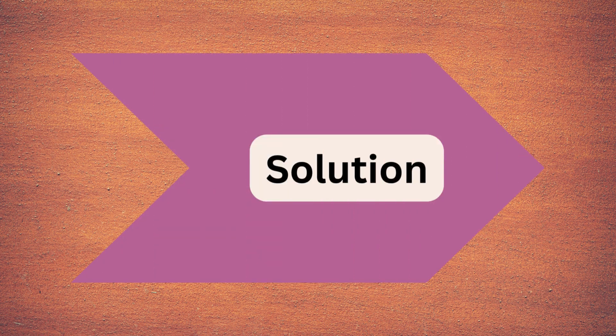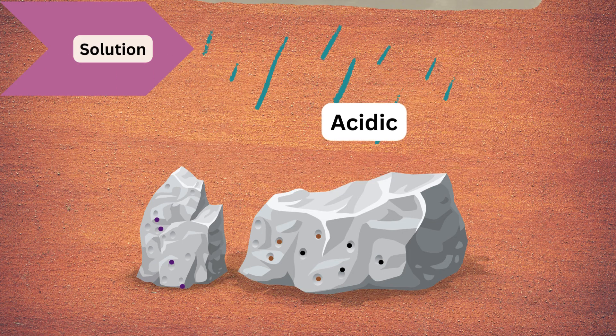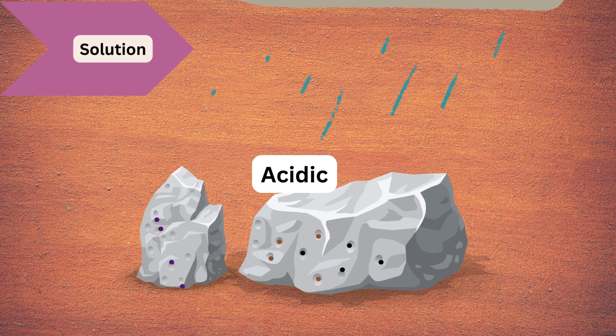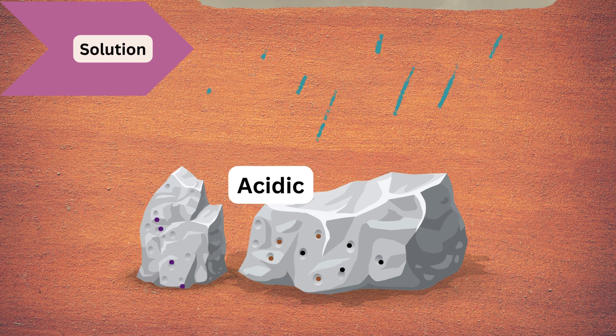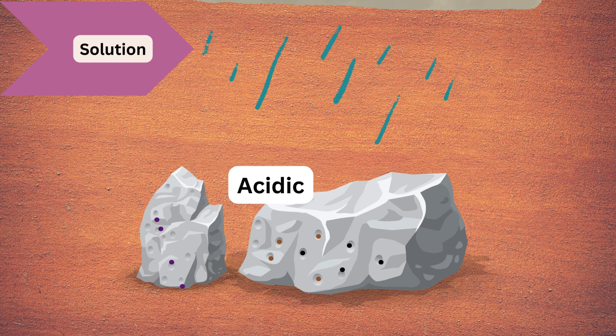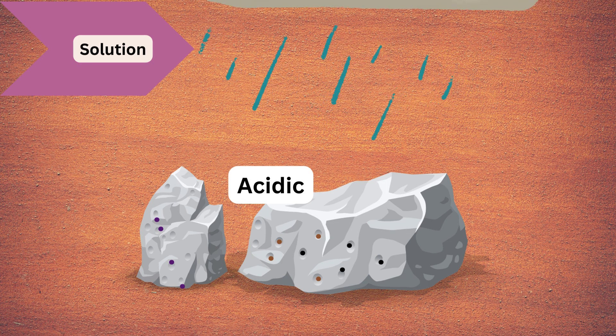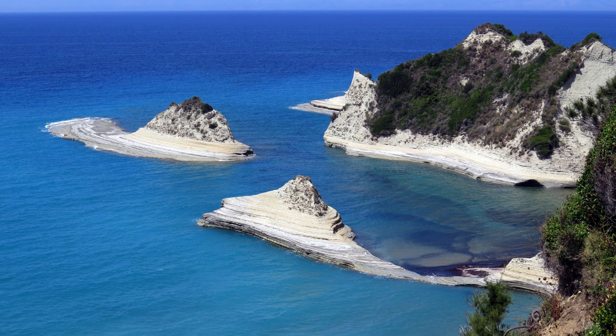Next is solution. Minerals dissolve in water, particularly those that are soluble, such as rock salt. This leads to the formation of caves and limestone regions where rock is dissolved by acidic water. Here you can see the white formation.